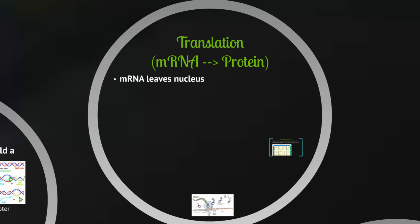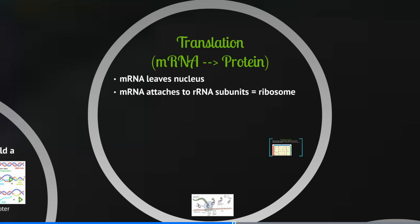First, the messenger RNA needs to leave the nucleus and go somewhere where it can actually build proteins. The messenger RNA is going to attach to a subunit of rRNA — ribosomal RNA — and those subunits will self-assemble into a functional ribosome. Remember that ribosomes are the organelles that will build proteins.